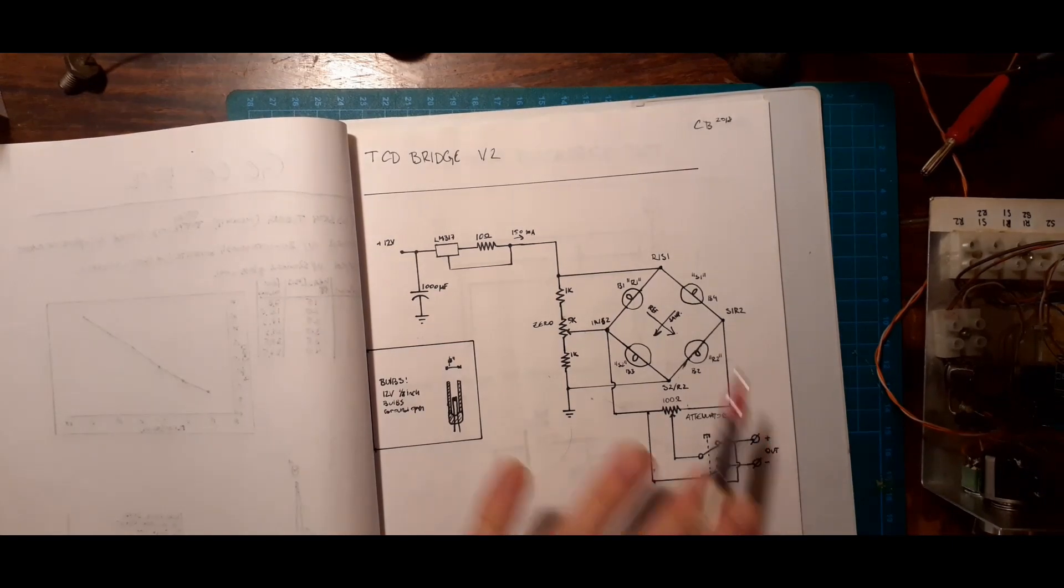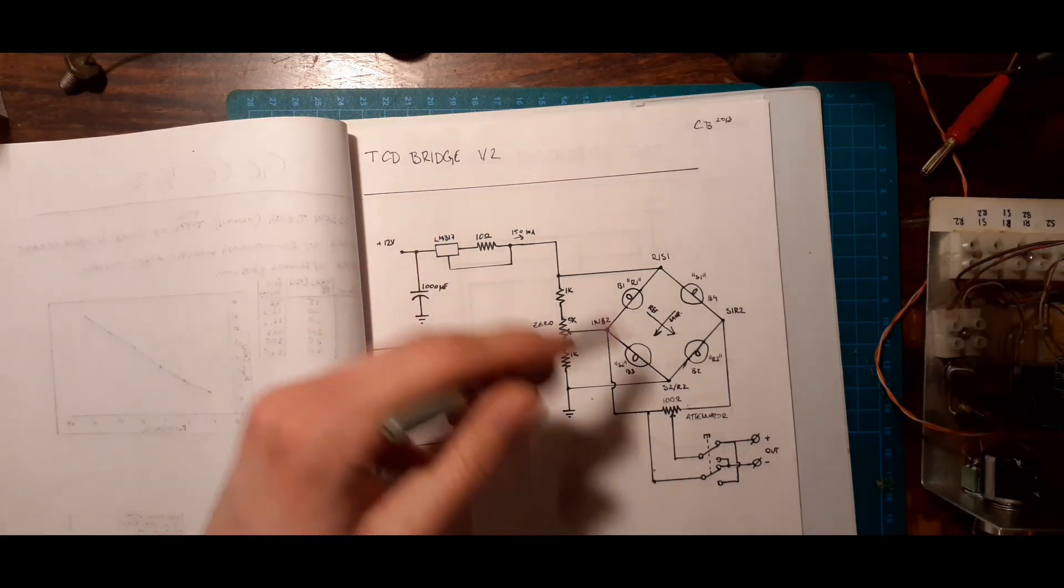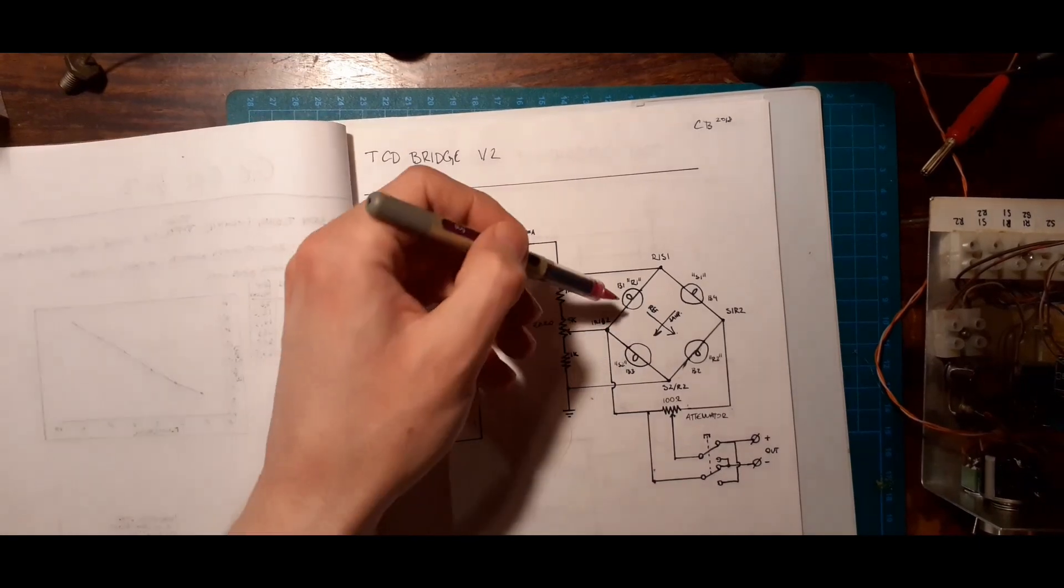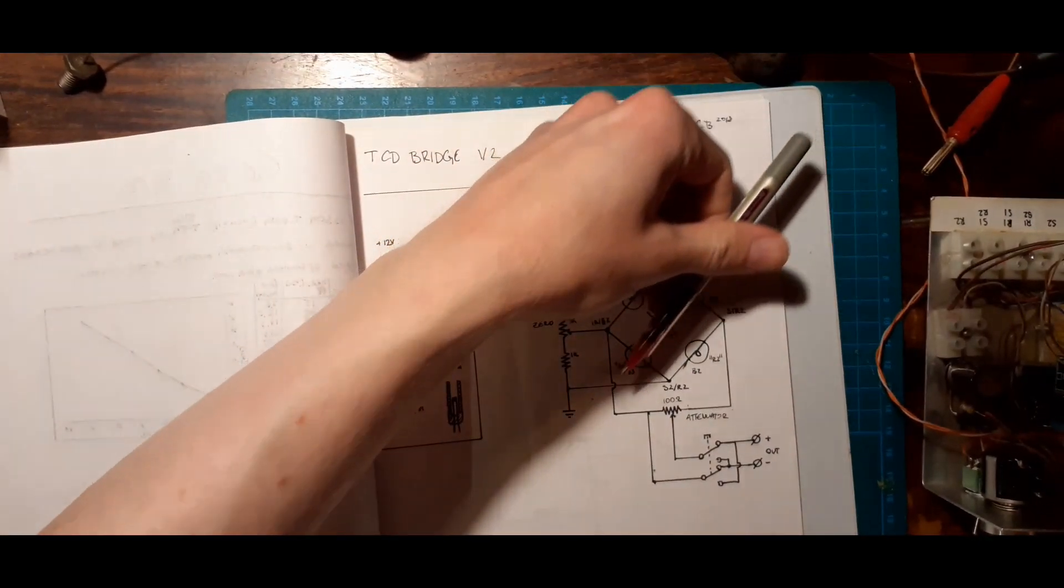This is the basic thermal conductivity detector, and it's literally just four filaments, little thin wire filaments in a Wheatstone bridge configuration here, with some additional circuitry I'll talk about in a bit. And you have two of them in your reference flow, and you have two of them in your sample flow.